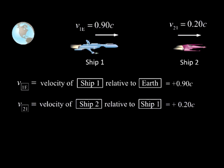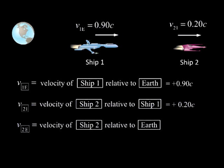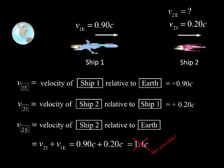In this case, using the classical addition of velocities gives V21 plus V1e equal to 0.90c plus 0.20c equals 1.1c, which we know cannot be correct since the speed of light in vacuum cannot be exceeded according to the special theory of relativity.